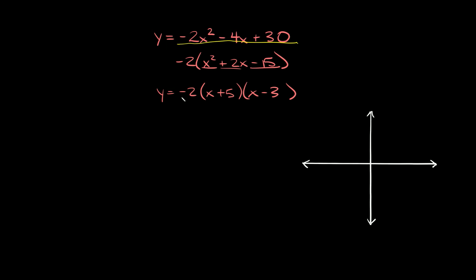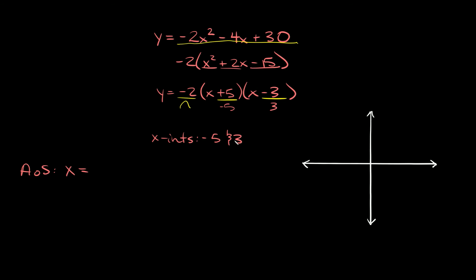So the function is now in intercept form: y equals negative 2 times x plus 5 times x minus 3. Since a is negative 2, the parabola opens down. The x-intercepts are negative 5 and positive 3. For the axis of symmetry: negative 5 plus 3 divided by 2 equals negative 2 divided by 2, which equals negative 1. The axis of symmetry is at x equals negative 1.